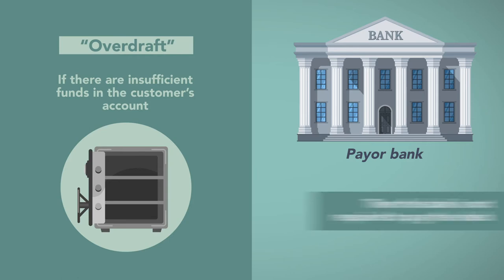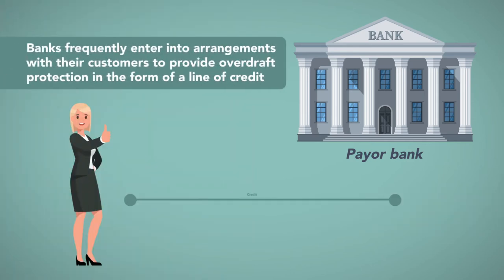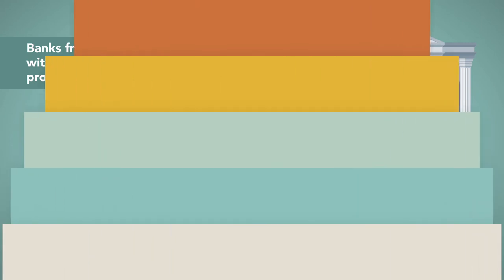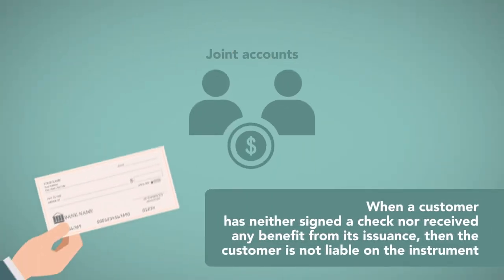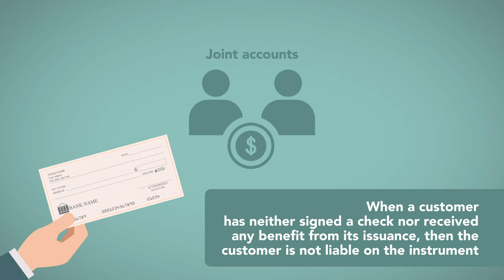If there are insufficient funds in the customer's account — called an overdraft — then the bank is not required to pay the check. Banks, however, frequently enter into arrangements with their customers to provide overdraft protection in the form of a line of credit. In the case of joint accounts, when a customer has neither signed a check nor received any benefit from its issuance, then the customer is not liable on the instrument.